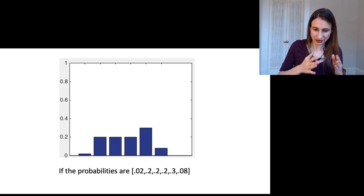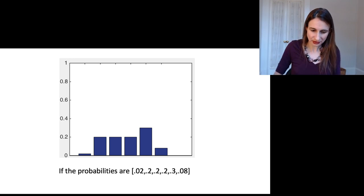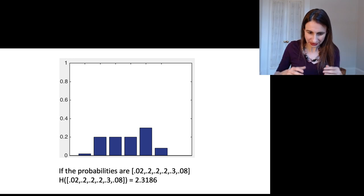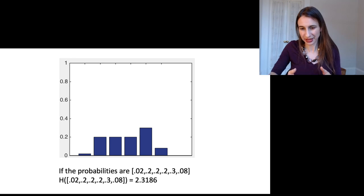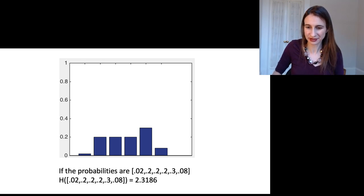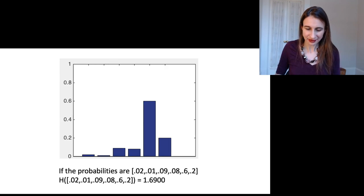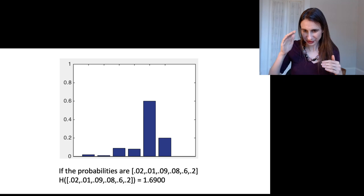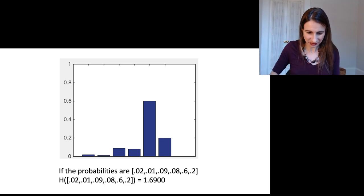If the probabilities look like this, they're fairly even except for a couple, there's a value of the entropy for that and you can compute it using the formula on the slide a couple slides ago. And if the probabilities look like this and they're very uneven, then the entropy is lower.